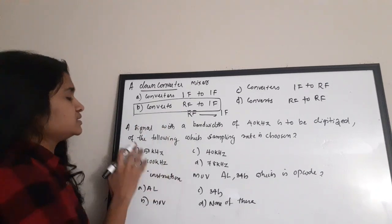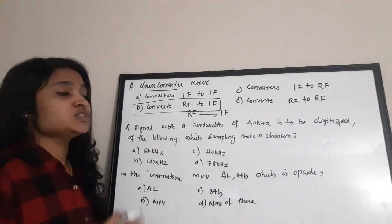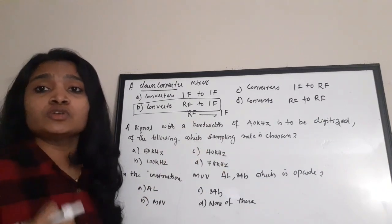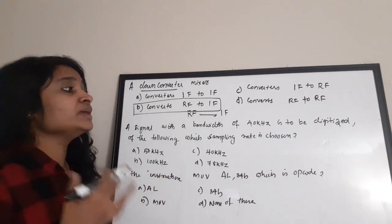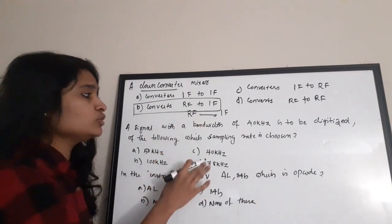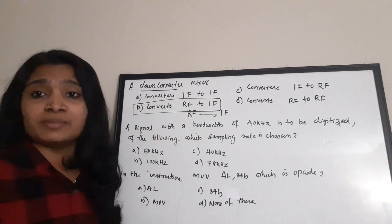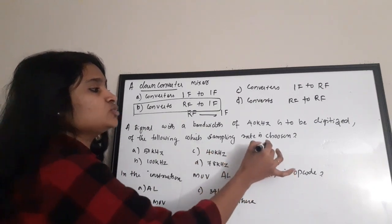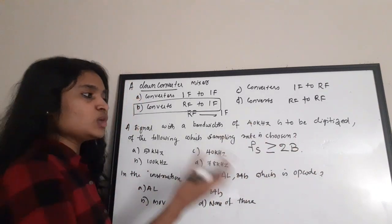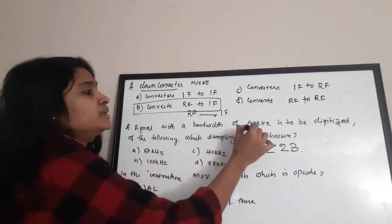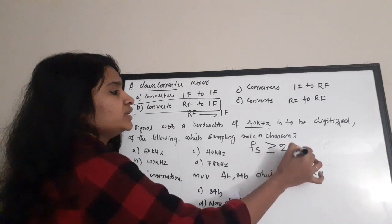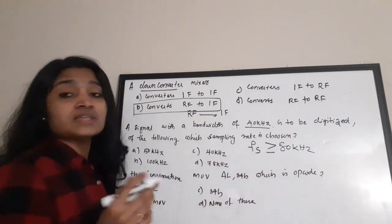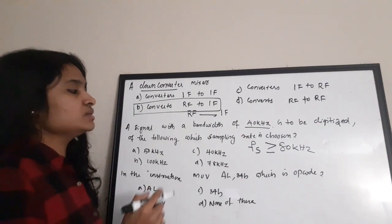Next question: a signal with a bandwidth of 40 kHz is to be digitized. Which sampling rate should be chosen? While digitizing, we sample and then quantize the signal. For sampling, we follow the Nyquist criteria: the sampling rate fs must be greater than or equal to two times the bandwidth. So fs ≥ 2 × 40 kHz = 80 kHz.